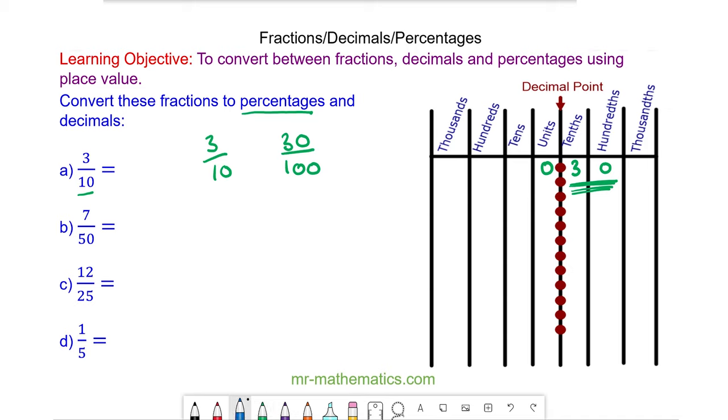We could also do this using equivalent fractions. We have 10 multiplied by 10 to make 100, and 3 times 10 to make 30. So 3/10 is 30 percent, and by placing it in a place value table you can see we've converted it to a decimal of 0.3.